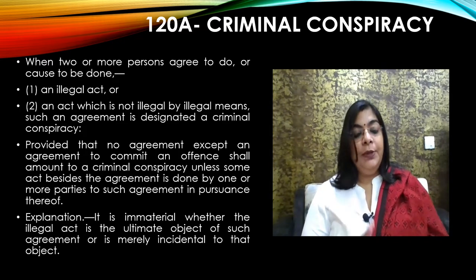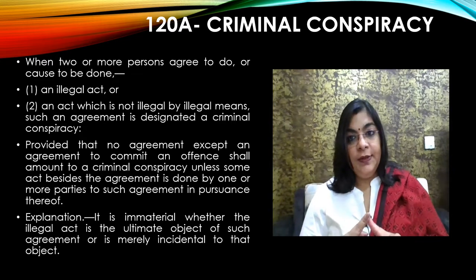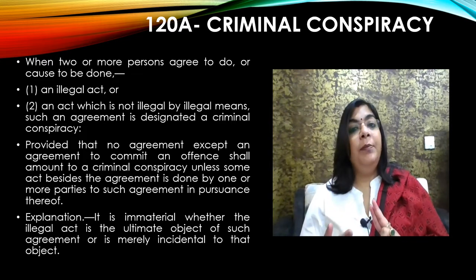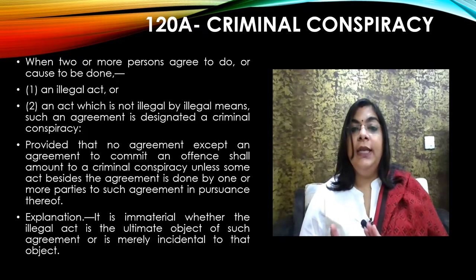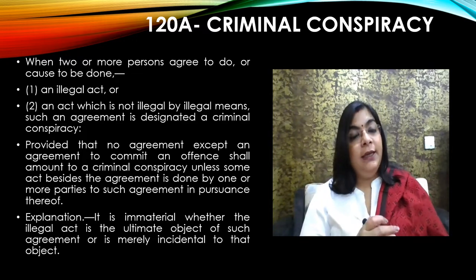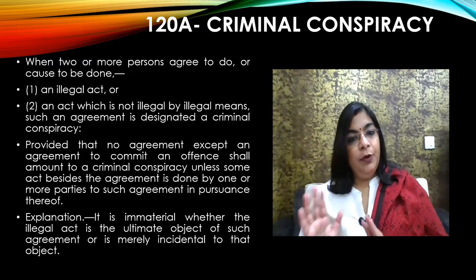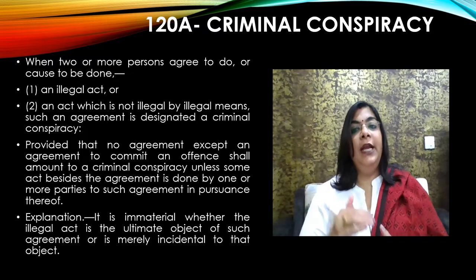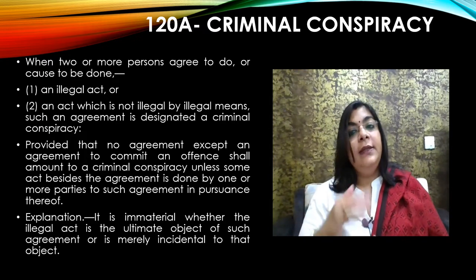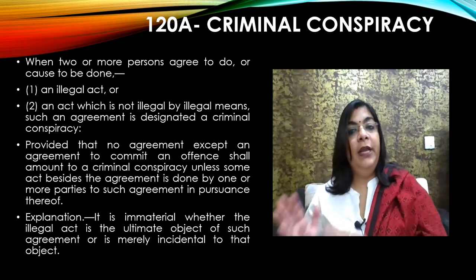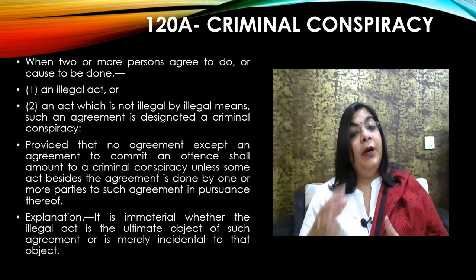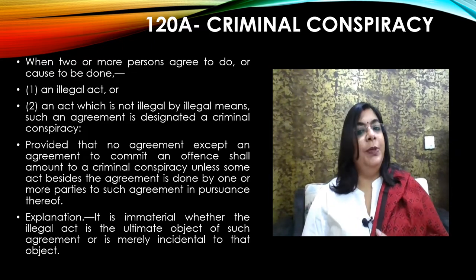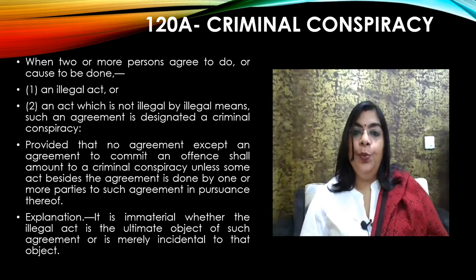The main requirements are: there must be two or more persons; they must make a plan or conspire against any illegal thing, or anything not illegal but committed by illegal means. Even if that particular act has not been done, all two or more persons conspiring for something illegal will bear liability for criminal conspiracy. This is Section 120A of IPC.